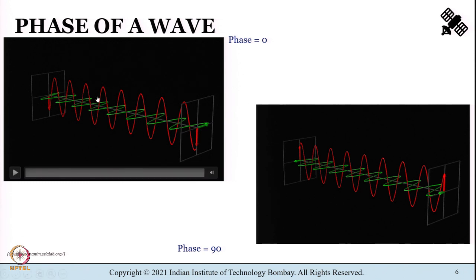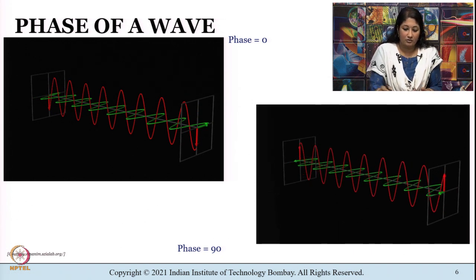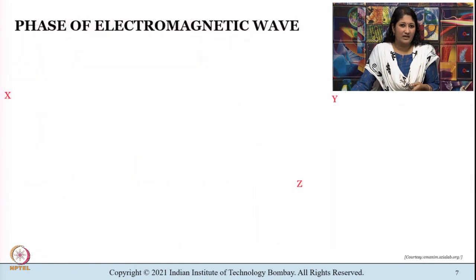We discussed the phase of a wave earlier. In our initial lectures we discussed different properties we can derive from a wave: its amplitude, frequency, wavelength, and phase. Let me reiterate the small videos from Module 1 showing a wave with phase 0 on the left side and a wave with phase 90 degrees on the right side. Let us try to understand whether the phase of a wave can be used to estimate distance.